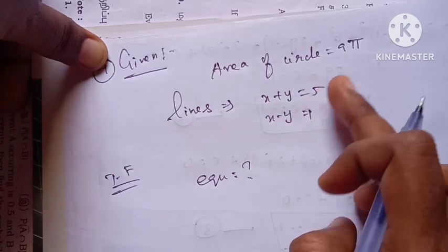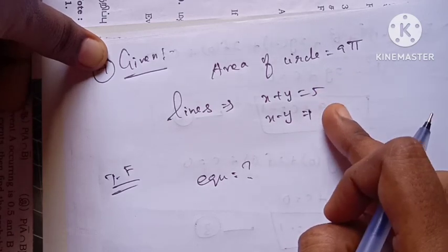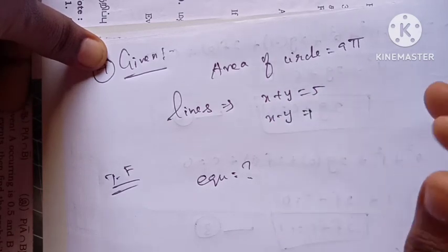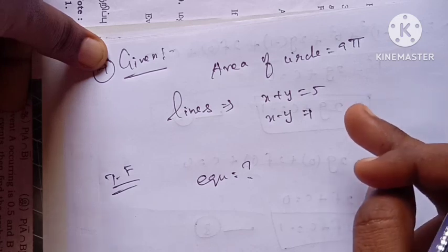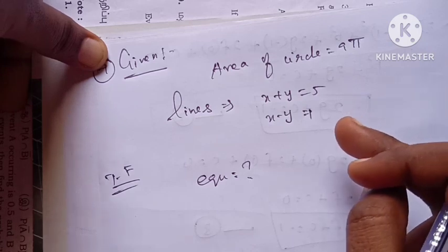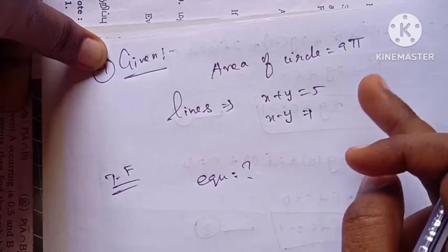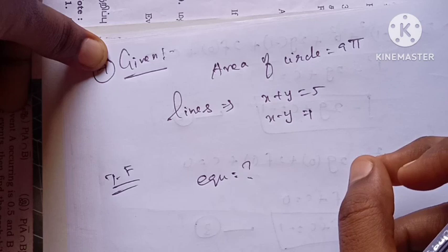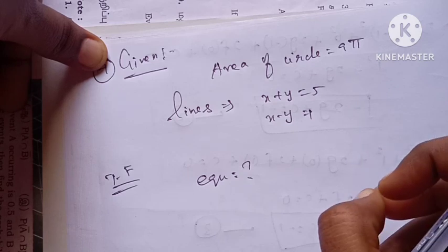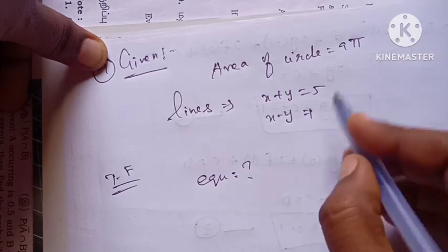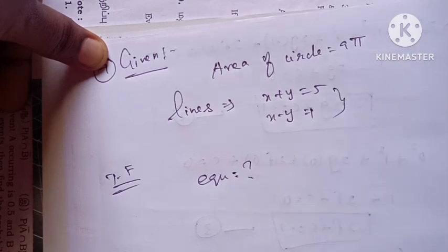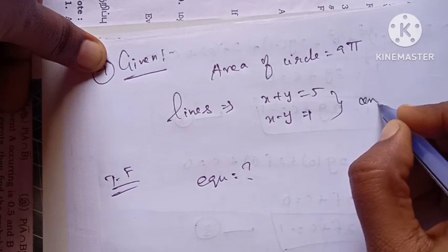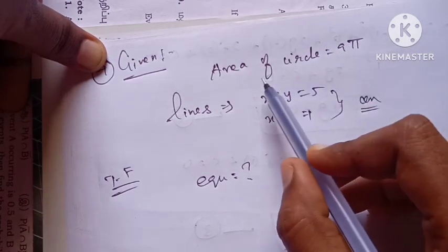We have two equations. We simplify them and find x. Since the diameters pass through the center, the intersection point of these two lines gives us the center point of the circle.